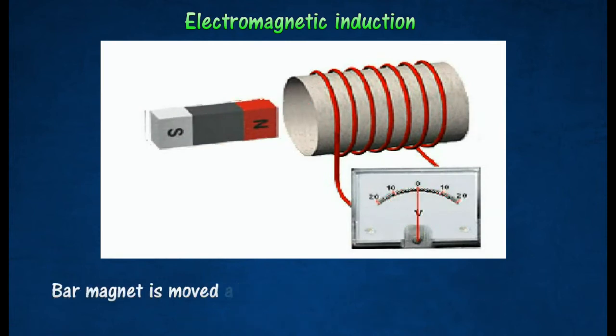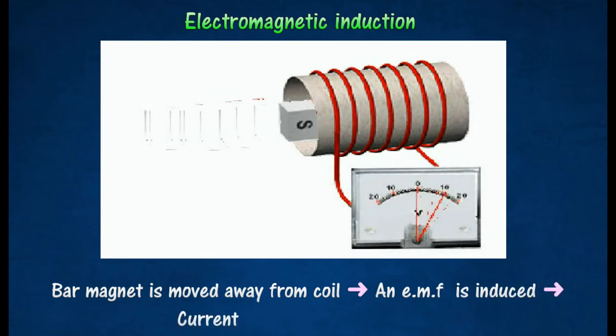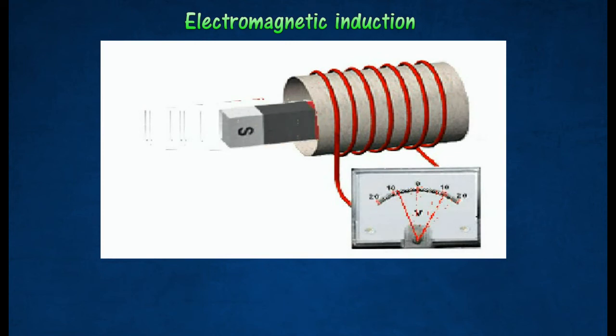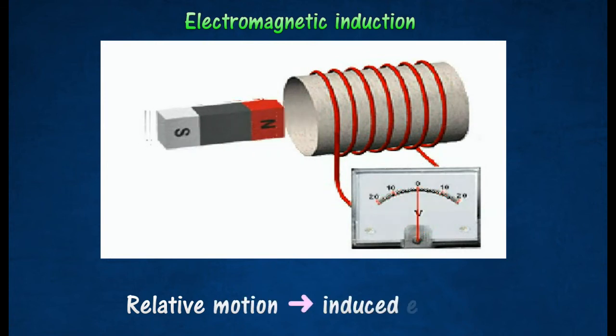If the coil is moved away from the magnet, an electromotive force is induced in the coil too. The effect of producing an electromotive force and hence a current, when there is a relative motion between the conductor and a magnetic field, is known as electromagnetic induction.